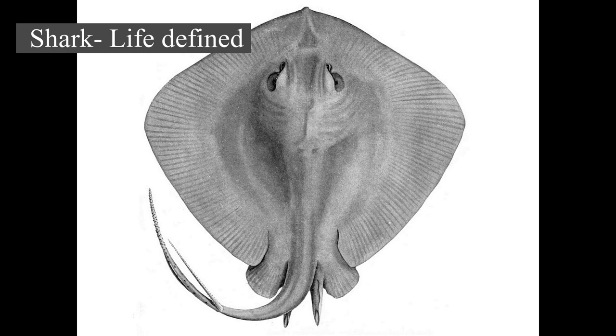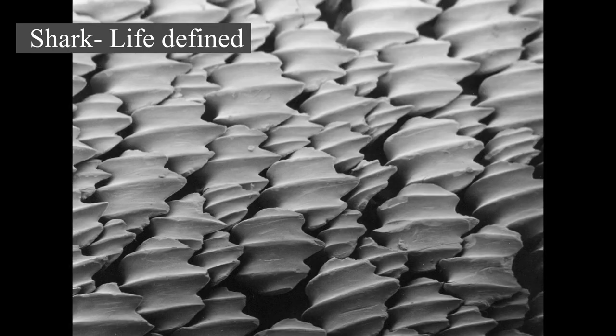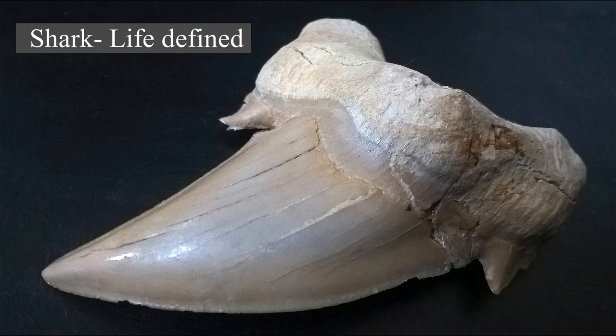Sharks are found in all seas and are common to depths up to 2,000 m (6,600 ft). They generally do not live in freshwater, although there are a few known exceptions, such as the bull shark and the river shark, which can be found in both seawater and freshwater. Sharks have a covering of dermal denticles that protects their skin from damage and parasites, in addition to improving their fluid dynamics. They have numerous sets of replaceable teeth. Several species are apex predators, which are organisms at the top of their food chain.